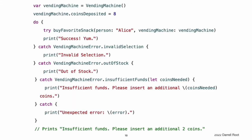For example, this code matches against all three cases of the VendingMachineError enumeration. In this example, the buyFavoriteSnack function is called in a try expression because it can throw an error. If an error is thrown, execution immediately transfers to the catch clauses which decide whether to allow propagation to continue. If no pattern is matched, the error gets caught by the final catch clause and is bound to a local error constant. If no error is thrown, the remaining statements in the do statement are executed.